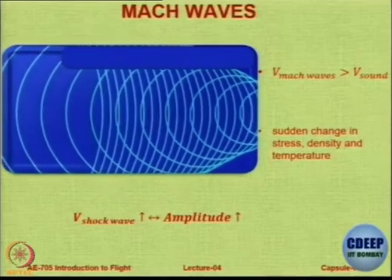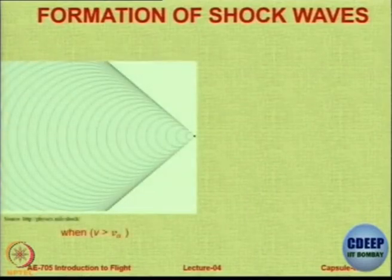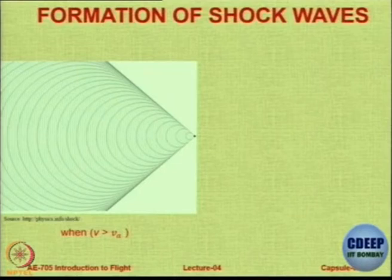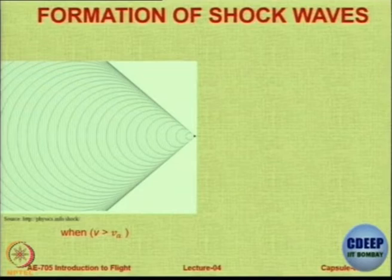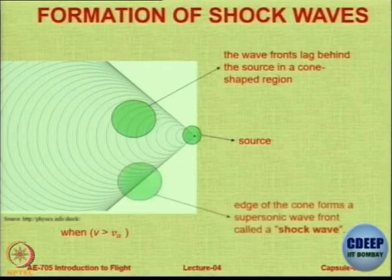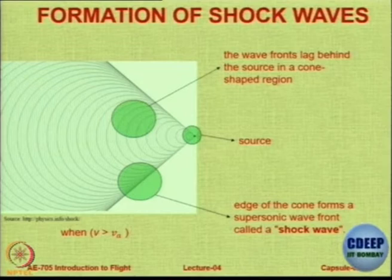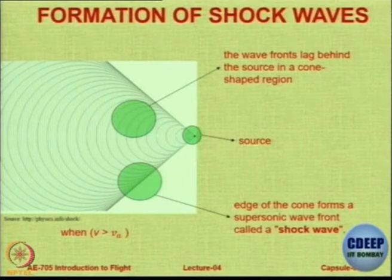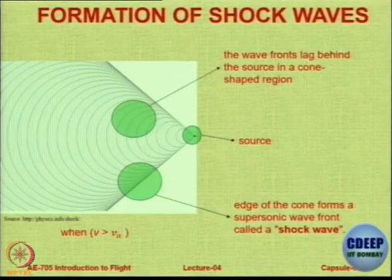As the velocity of the shock wave increases, these Mach waves are at a steeper angle and their amplitude also increases. Now let us look at the formation of shock waves. When the velocity is more than the velocity of sound — when V is more than a — the wave fronts are lagging behind the source in a conical region, and the edge of the cone is called a shock wave. This particular angle of the shock wave is directly a function of the speed of the object.